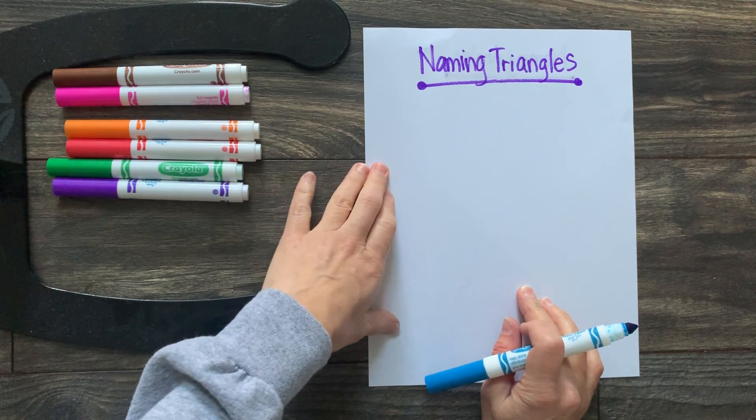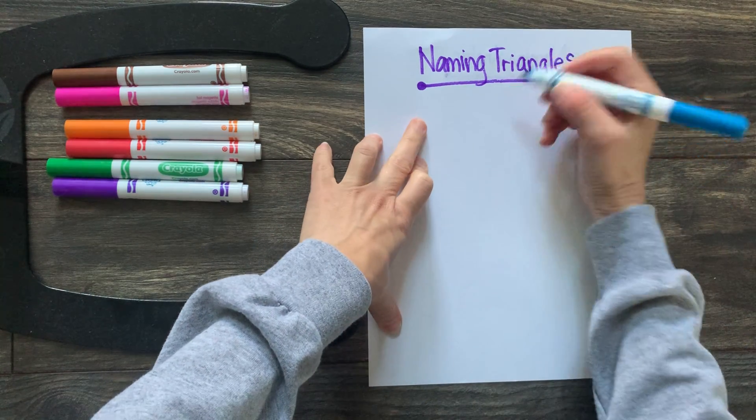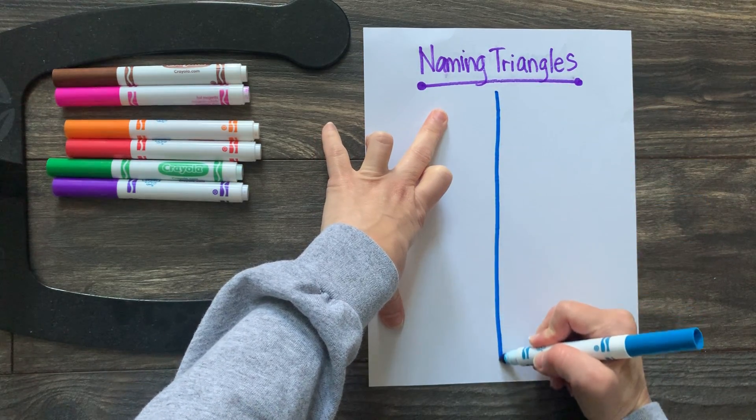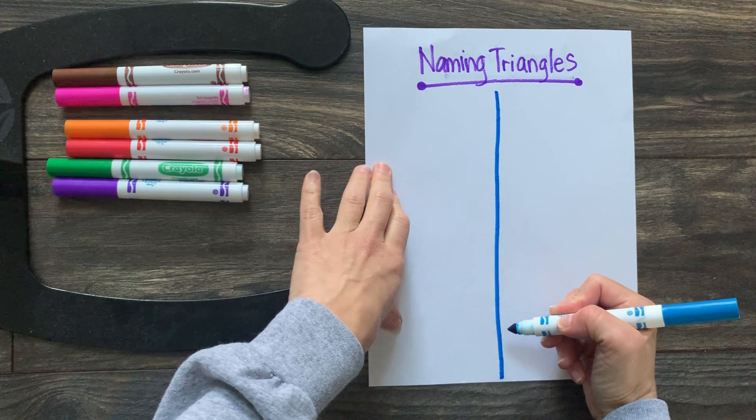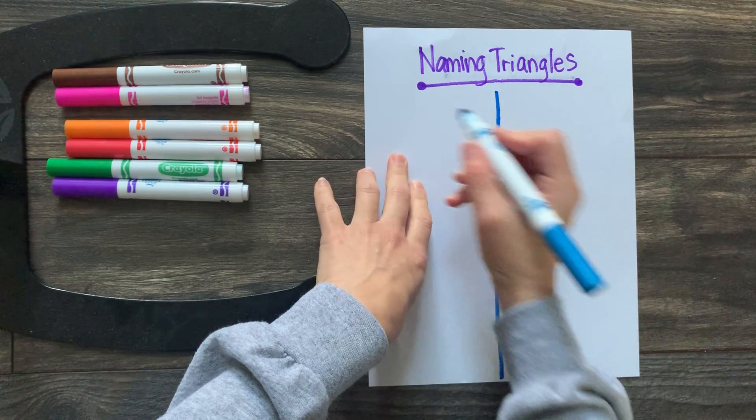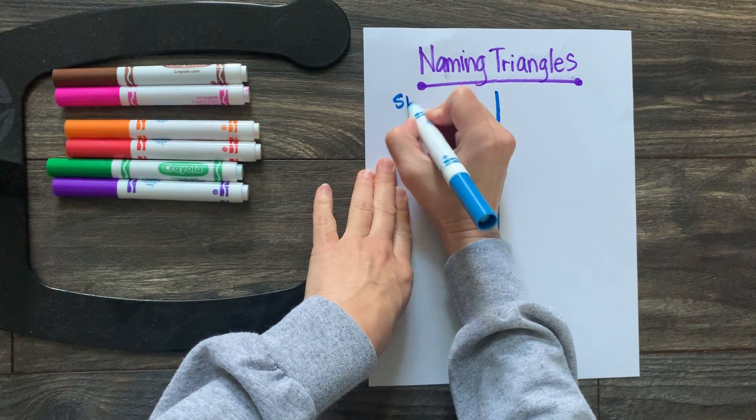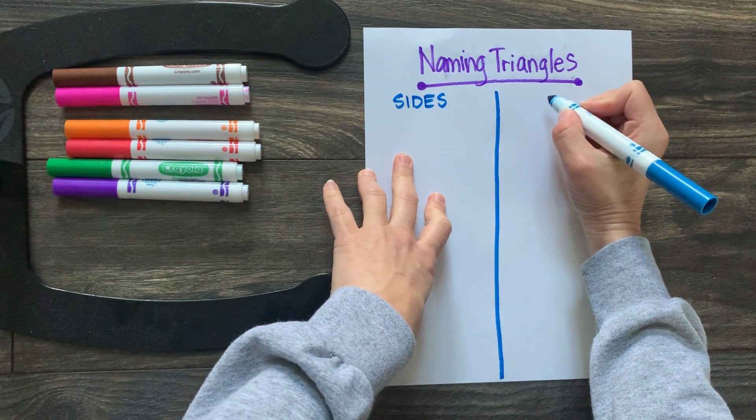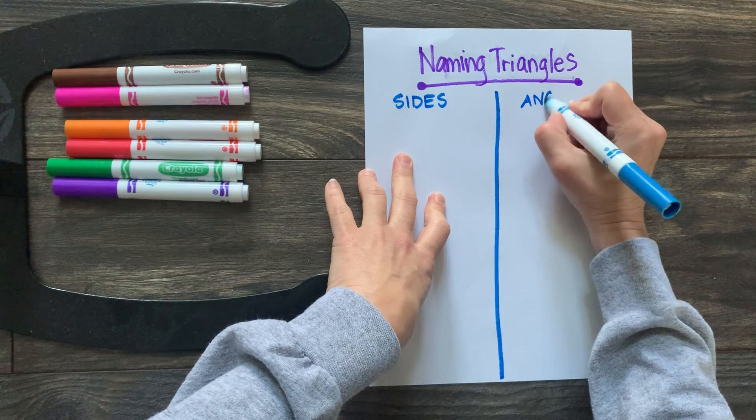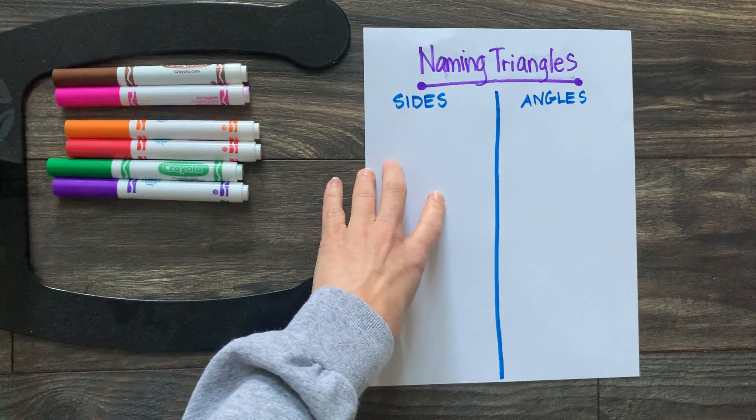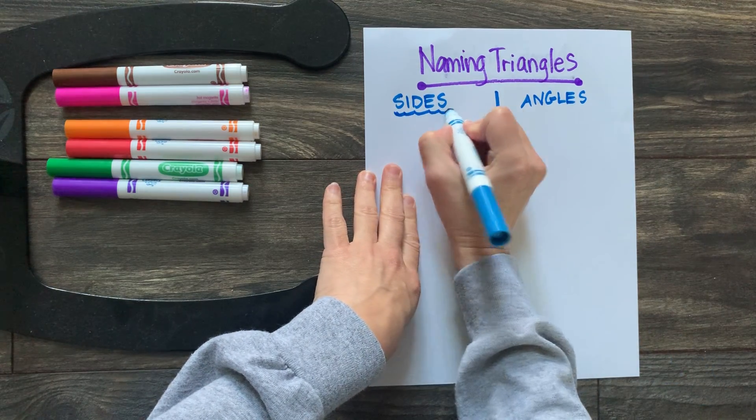We can name triangles in two different ways. So let's go ahead and break our paper into two, and let's talk about the two ways that we can name triangles. The first way, we're going to name them by sides, and we're going to name them by angles. So sides and angles.